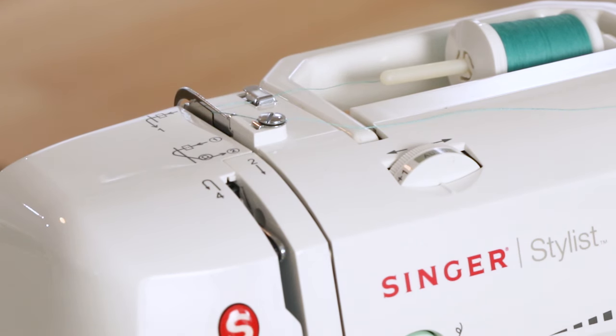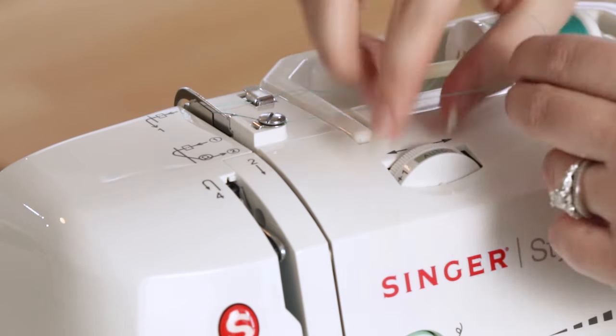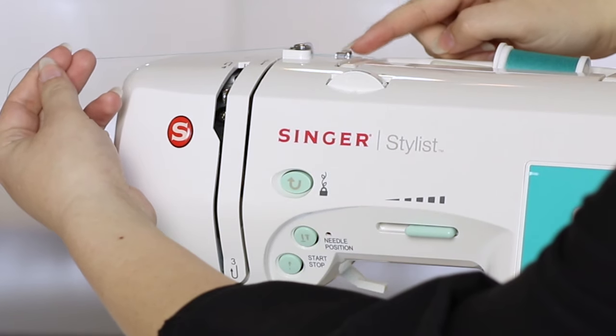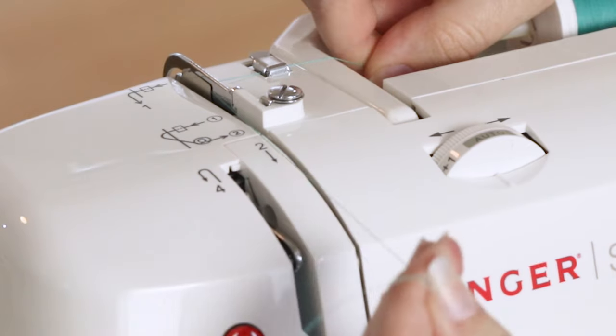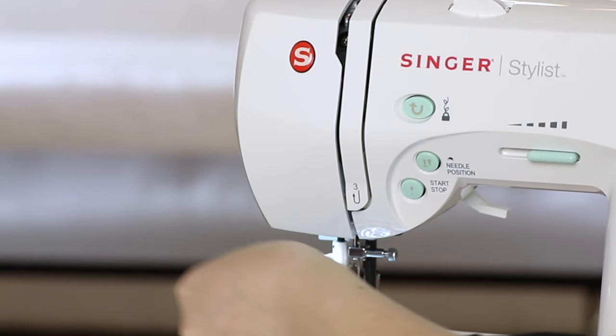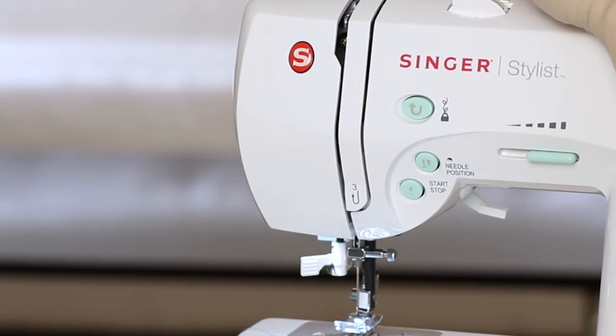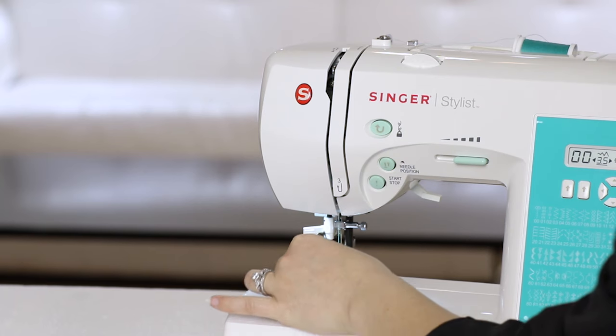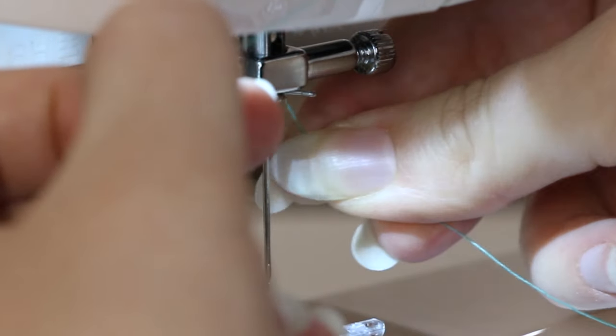If you've just wound a bobbin, the top of your machine probably looks like this. Let's take the thread off of the bobbin winding tension disc. It's already in metal guides one and two, so we'll come down number two's path, do a U-turn at number three, and back up to the take up lever. We're going to go from right to left and back down. Come down and place the thread behind the guide right above the needle.